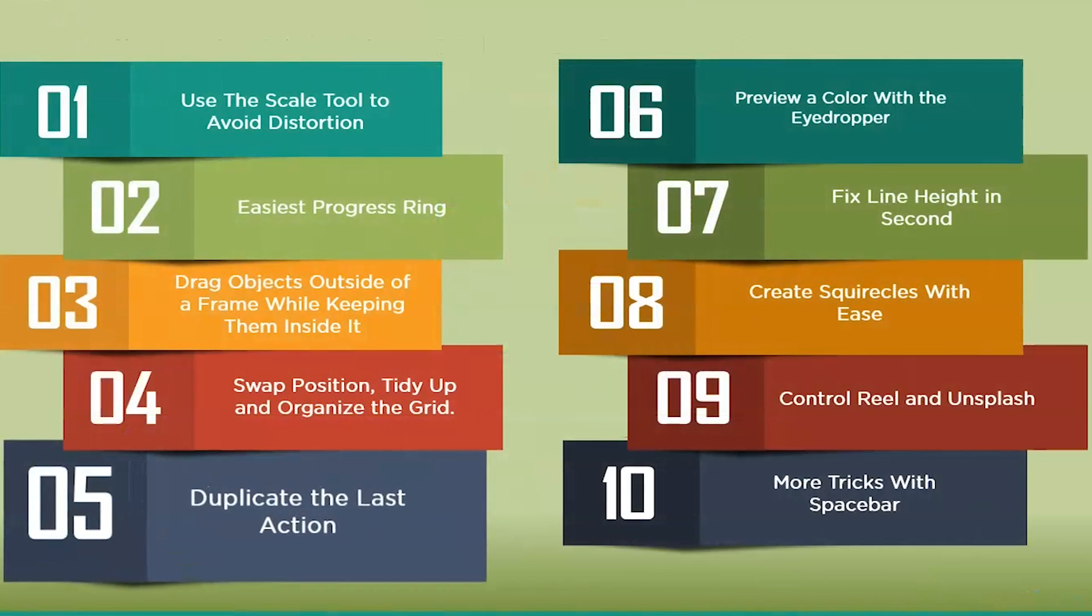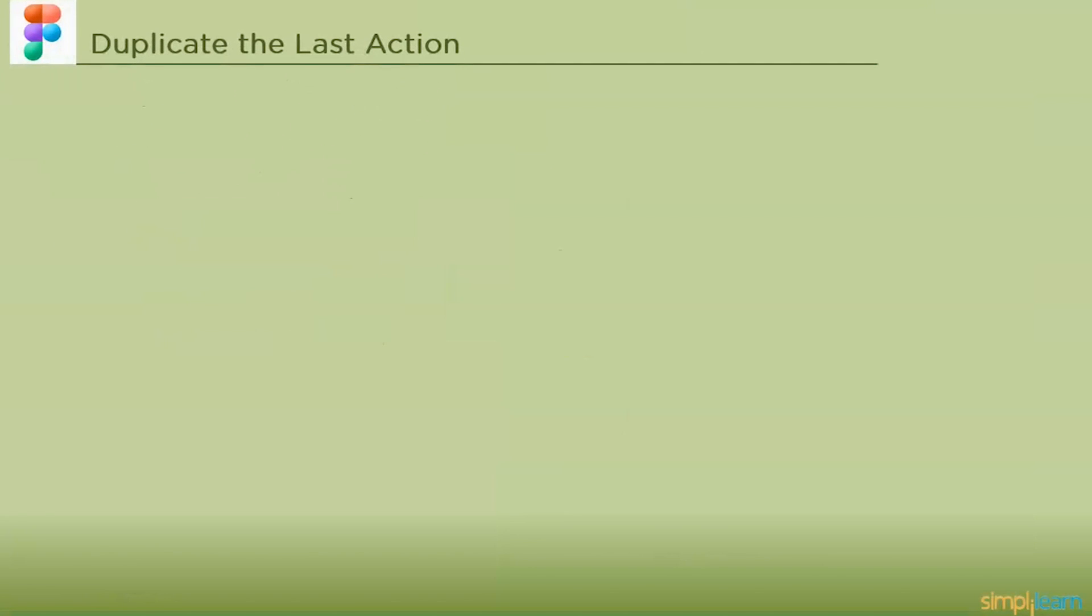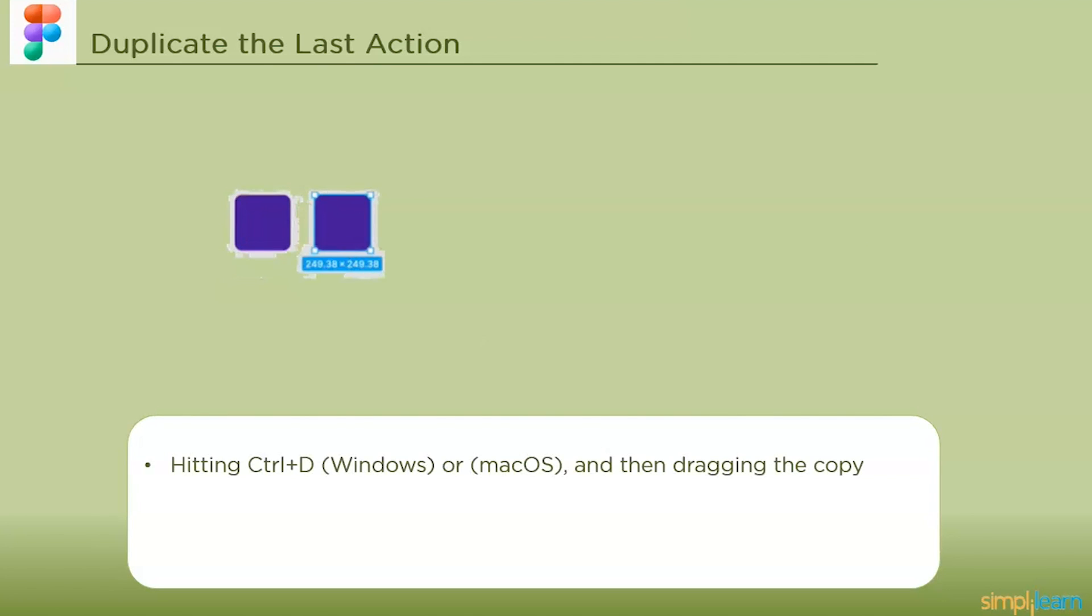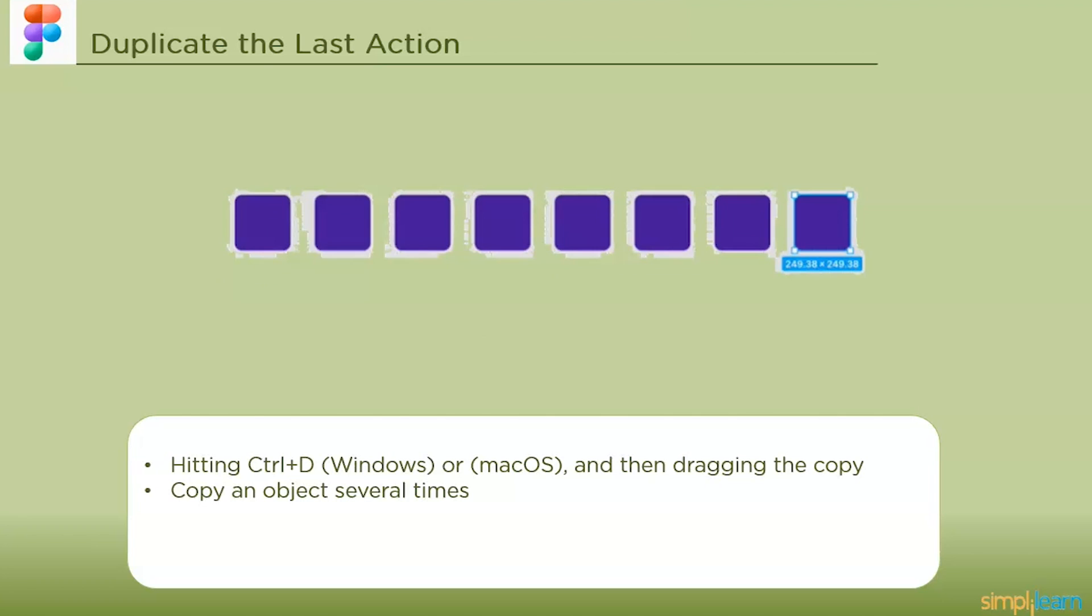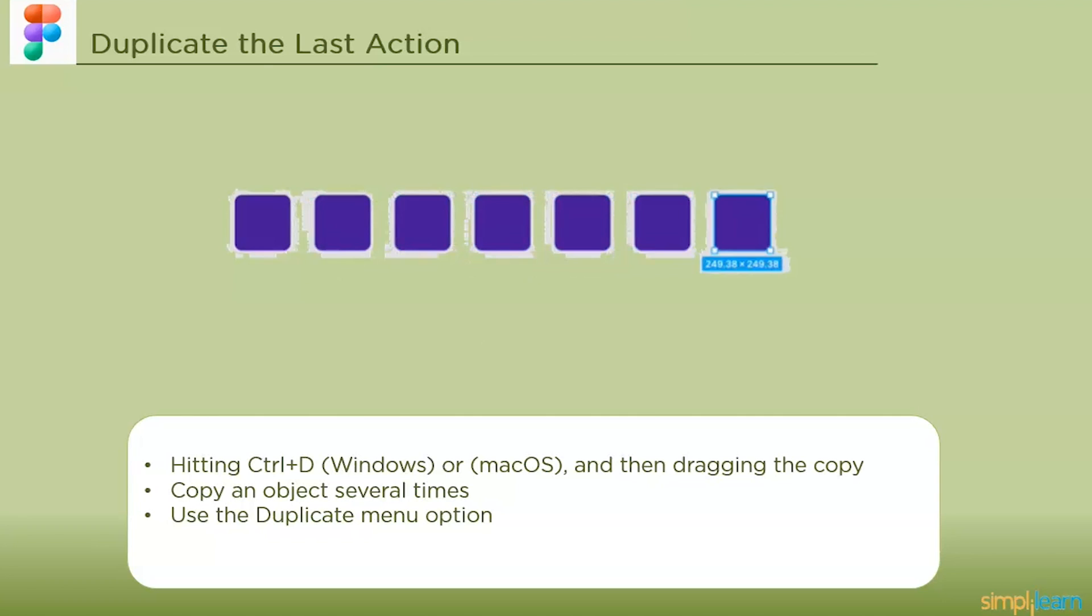The fifth one is duplicate the last action. By choosing the item in Figma, hitting the keyboard shortcut Ctrl+D for Windows or Mac OS, and then dragging the copy to the desired area, you can copy an object several times. Additionally you can use the duplicate menu option under the edit menu. Use the replicate menu or the command to copy an item many times in a grid or pattern.